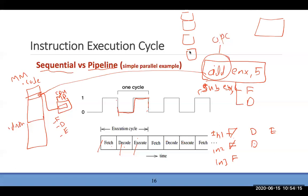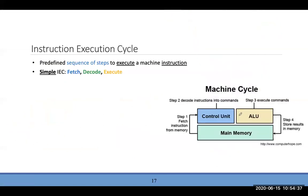Pipelining works until you hit the limit of how much you can divide the frequency. That's why we eventually moved to multi-core processors — to get more speed beyond what pipelining can provide. The control unit is responsible for fetching the instruction from memory, then decoding it, then handing off to the ALU for execution.